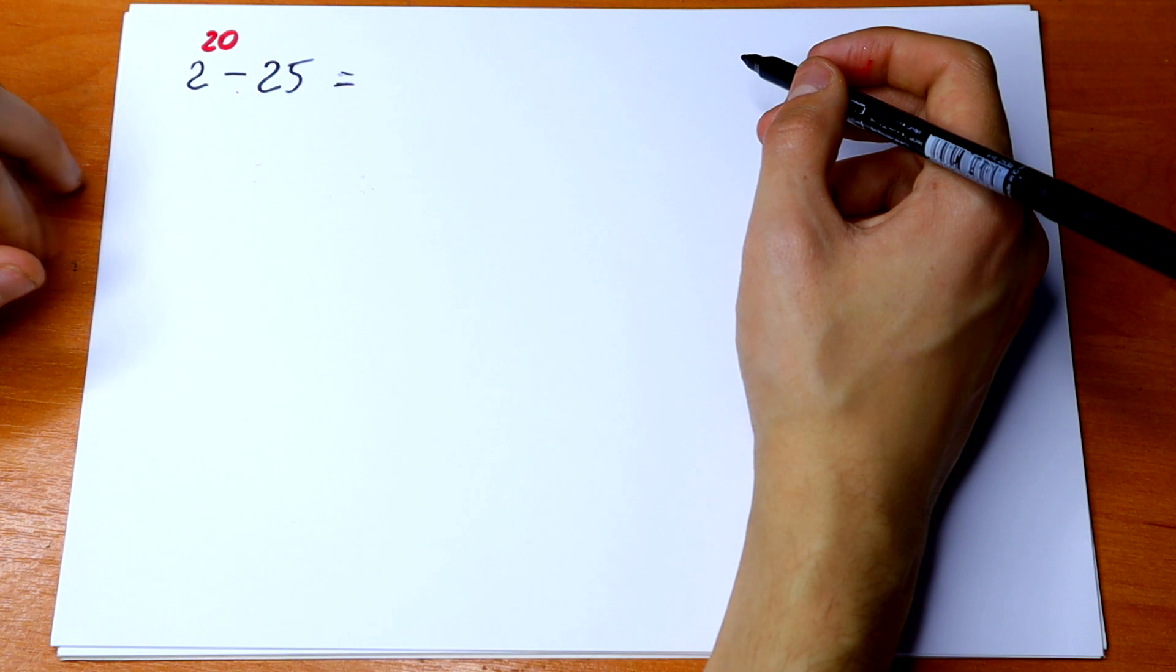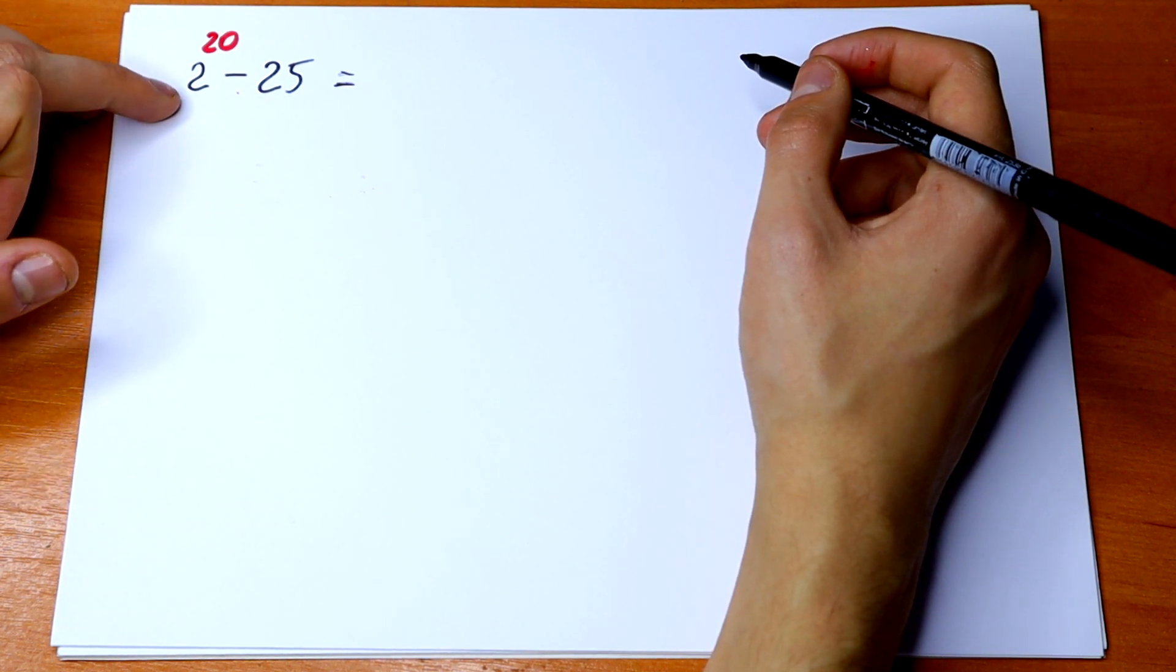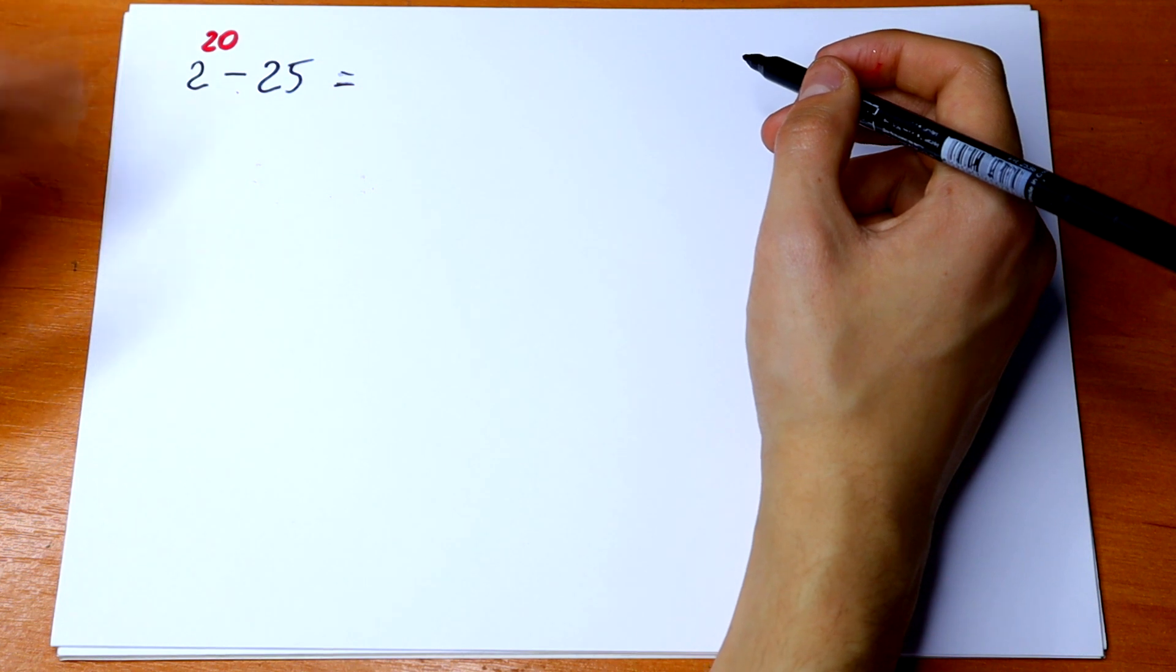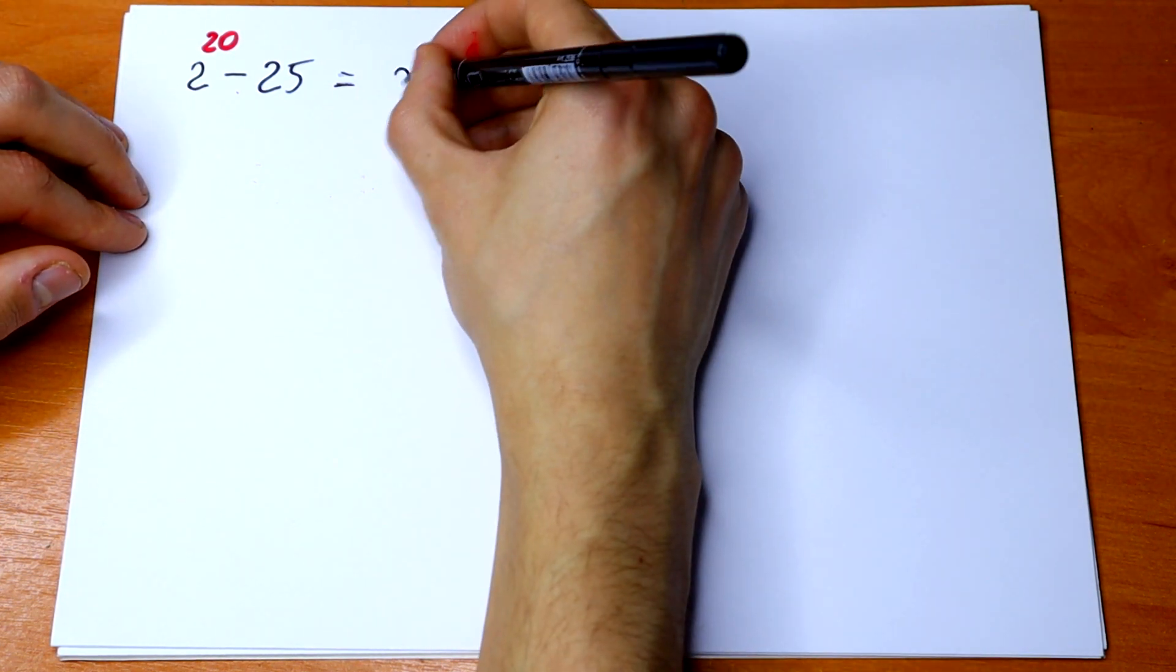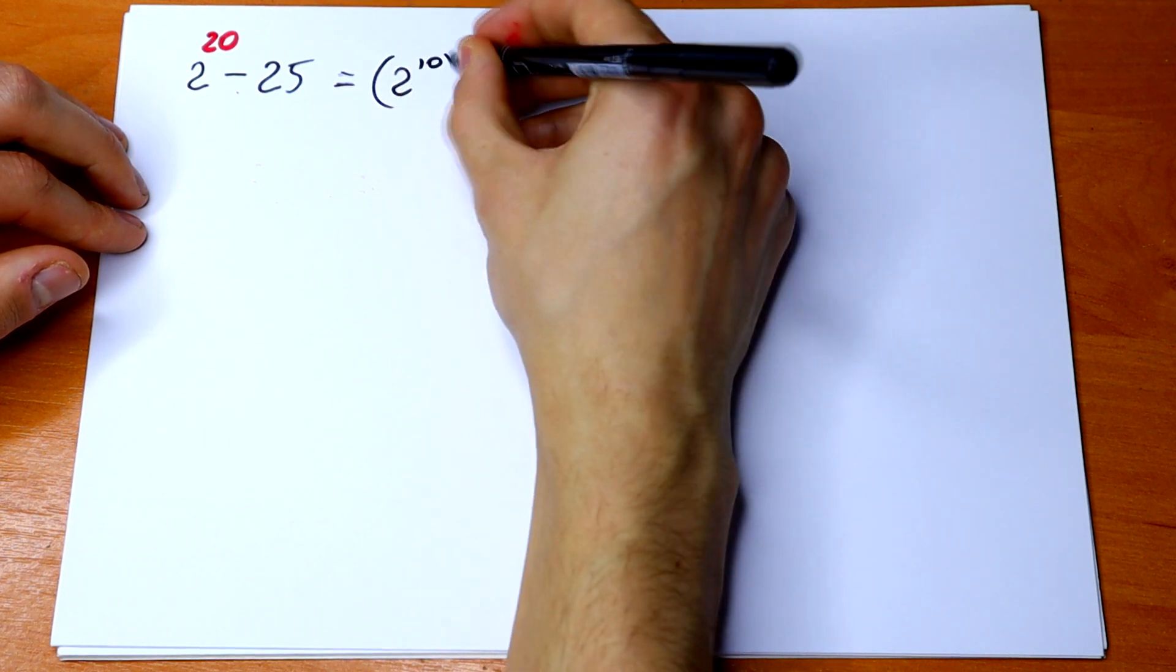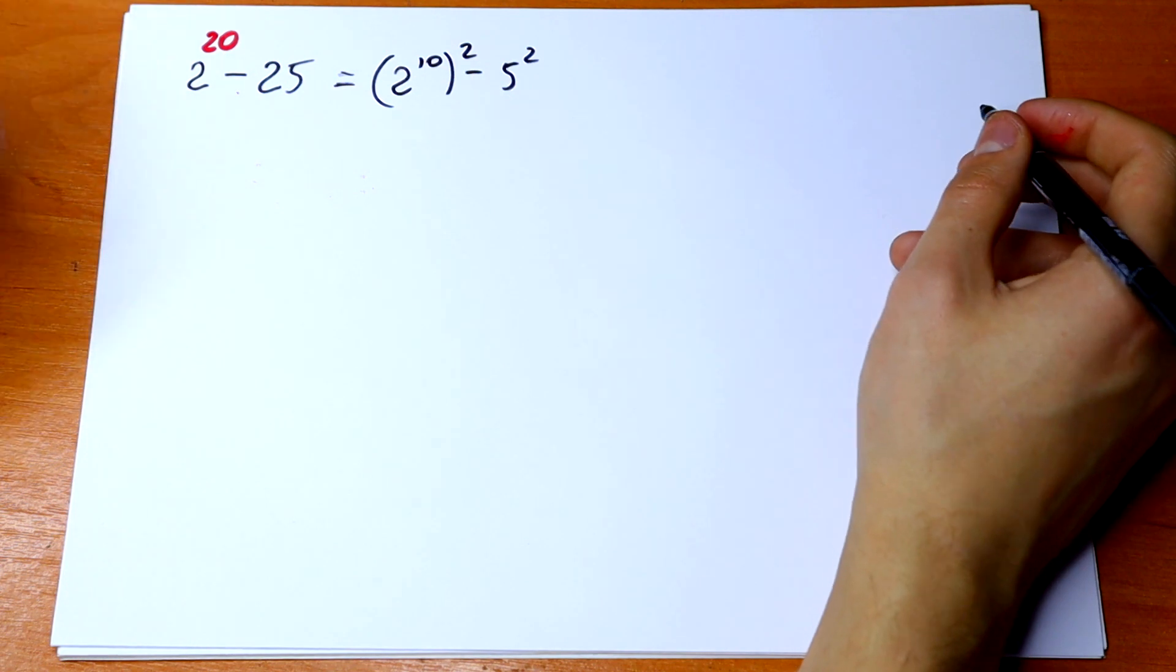So we can write this 25 as 5 square and we can write it as 2 to the 10th power all raised to the second power. Let's do this. 2 to the 10th power square minus 5 square. We can write it as well.